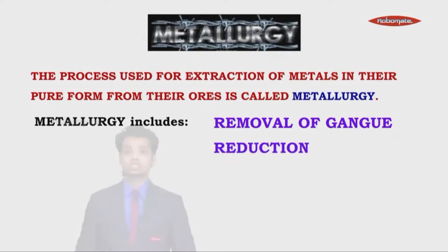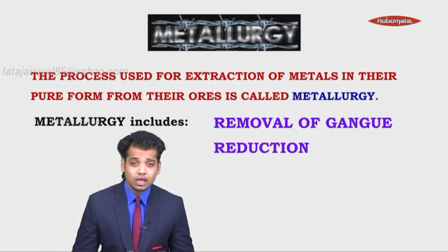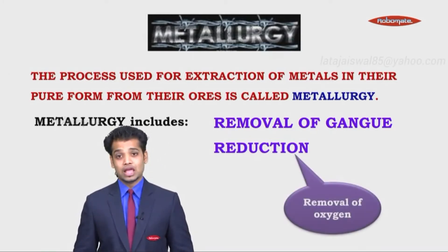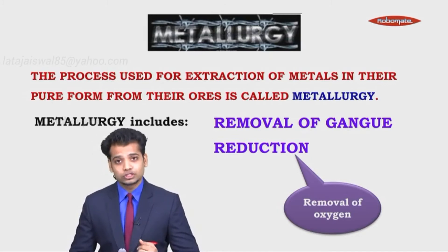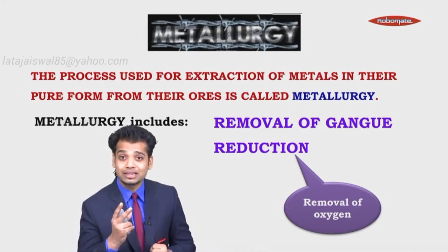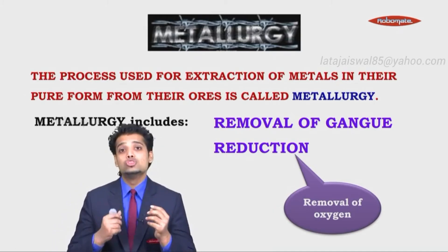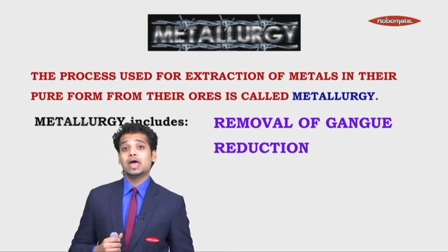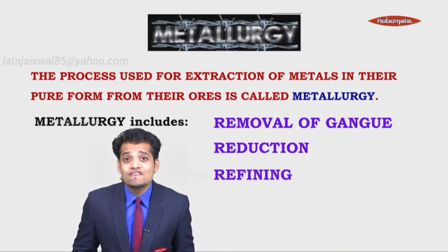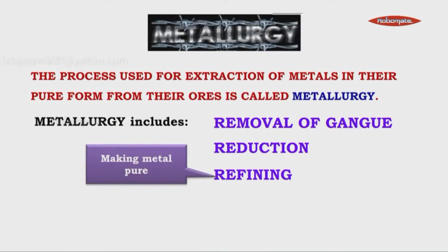Second is reduction. Reduction means removal of oxygen. So in order to remove oxygen, we reduce the metal and we get the metal. But if there is some sand left in the metal, will it react? No, it won't. So the third step is refining, where you make the metal pure — you remove the mud from the metal. We'll learn all of this with the help of this chart.